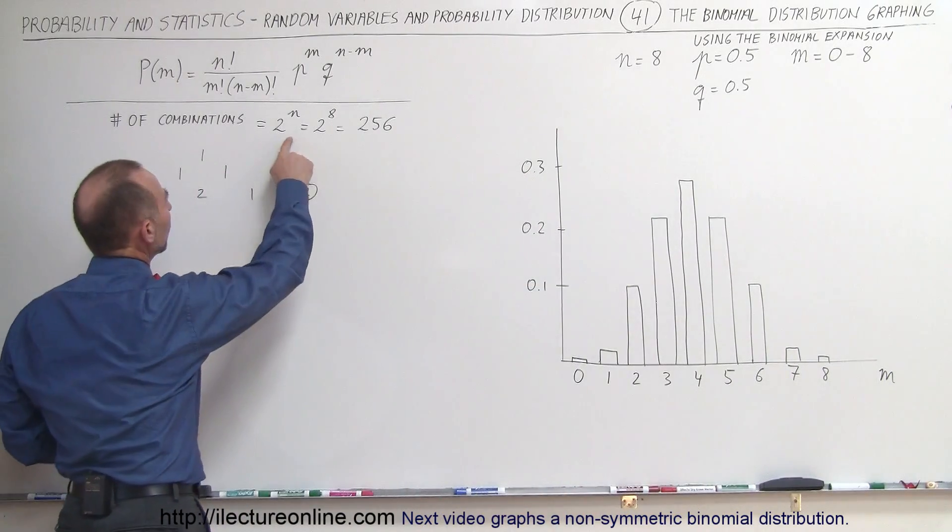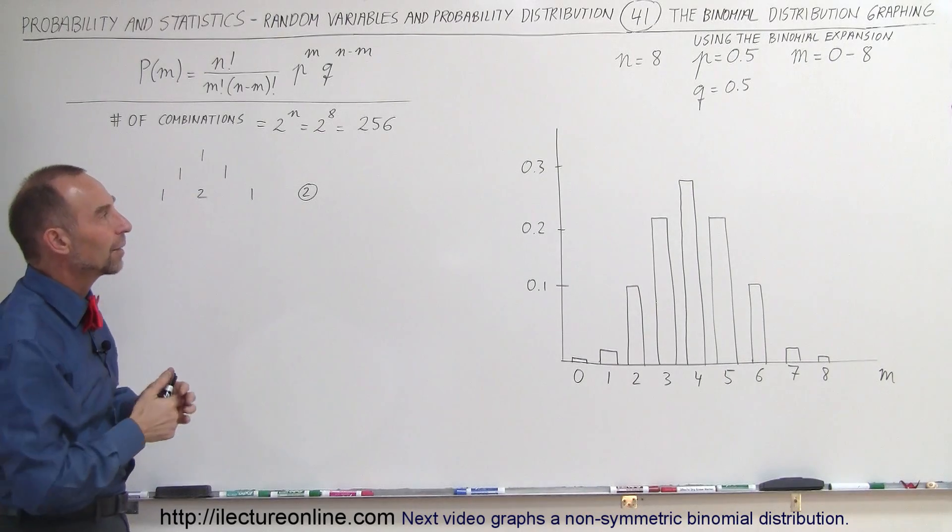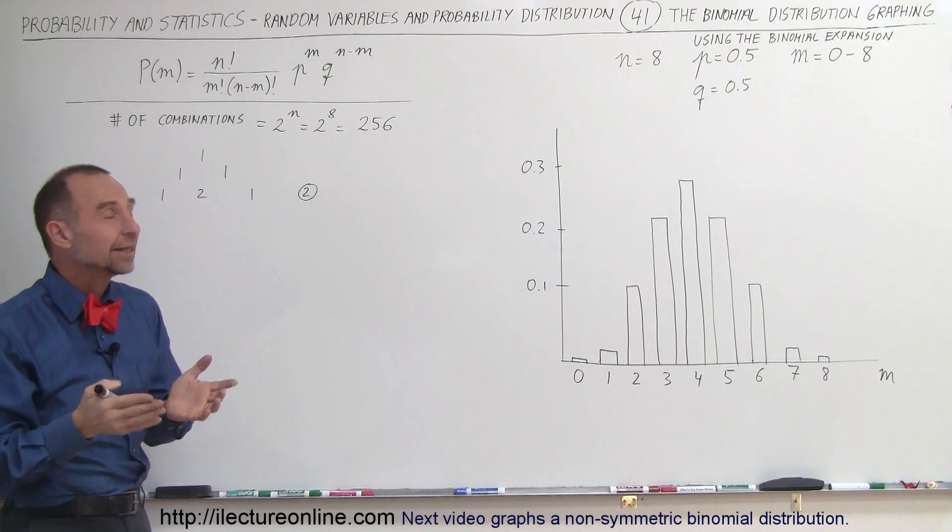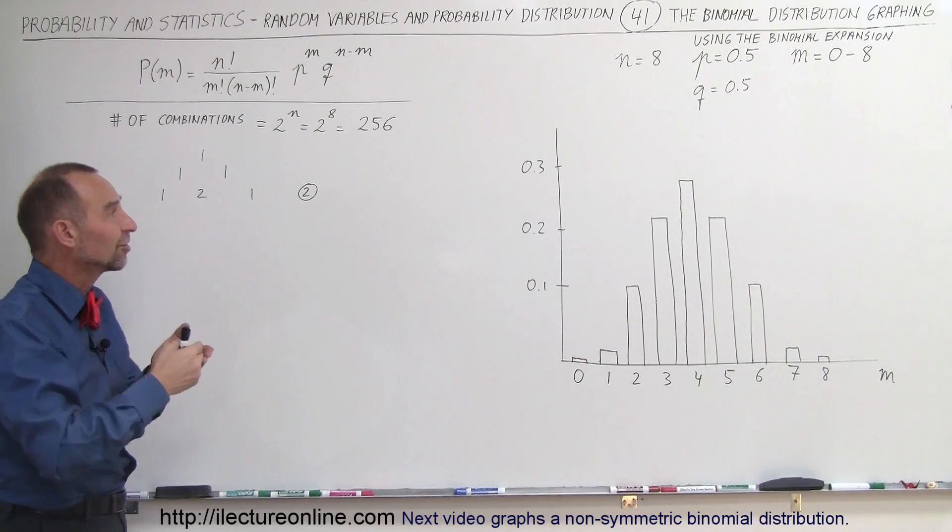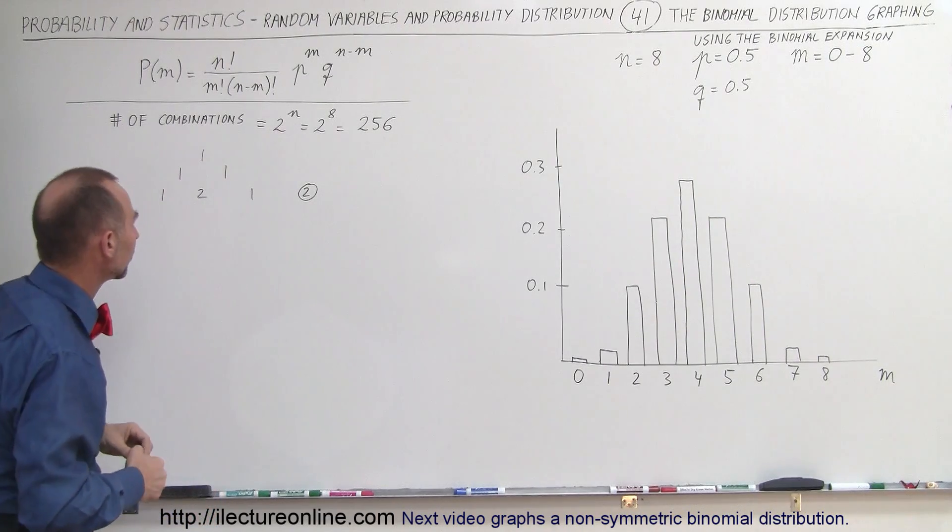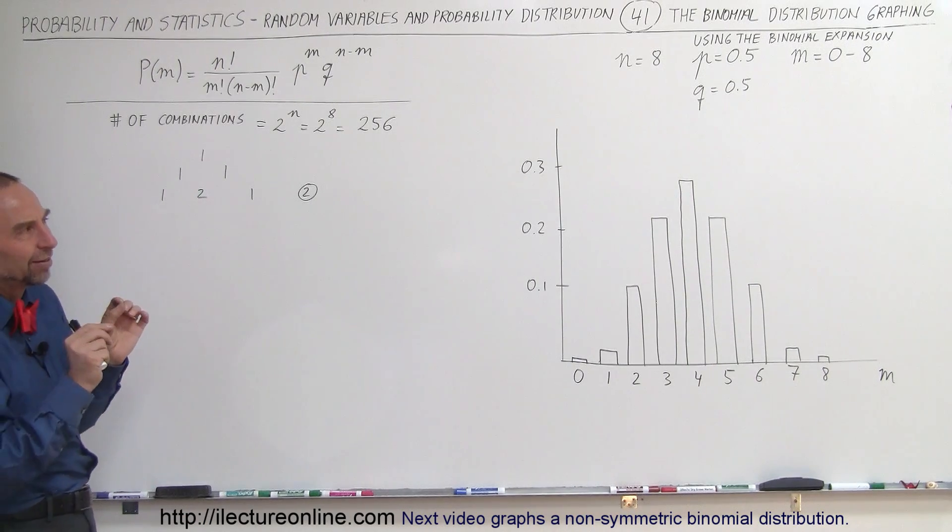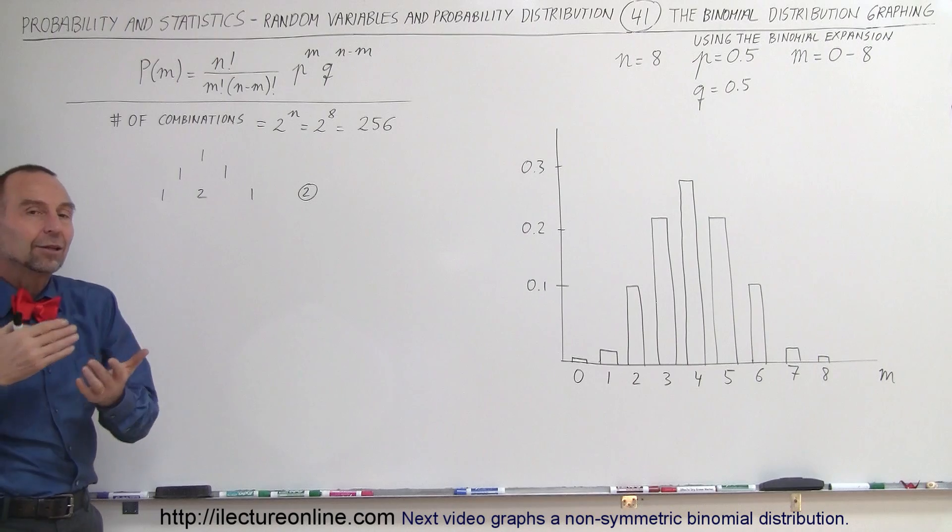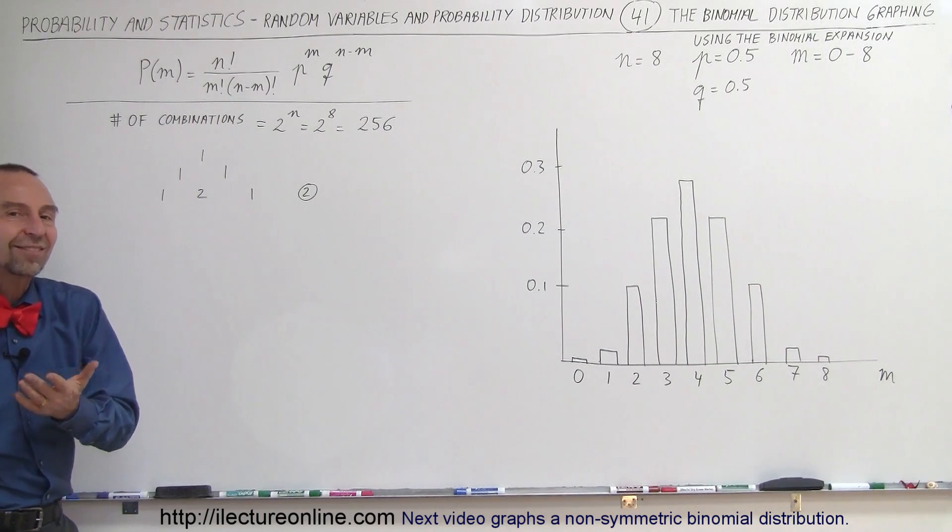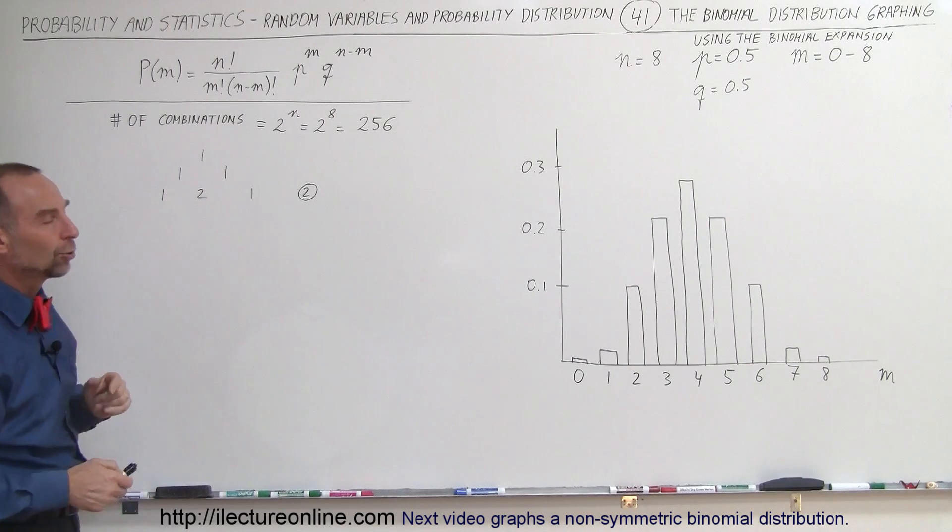So 2 to the 8 power would be the total number of combinations in which results come out. So since there's a 50-50 probability in each case, there's 256 combinations in which the probabilities can come out when you have 8 trials. And so then to find out the probability in each case, in each outcome, or I should better say in the probability of each success type going from 0 through 8, we can go ahead and use the coefficients of the binomial expansion.